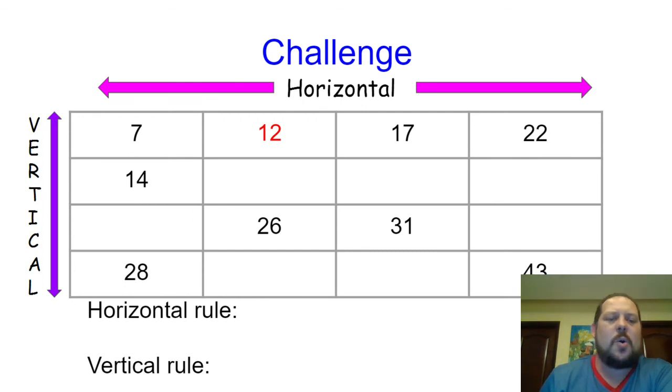And then let's look at our horizontal. What is happening as we go from seven to fourteen? How much does that change? And if we add that same amount, will that get us to twenty-eight? Yes. So what are the rules?